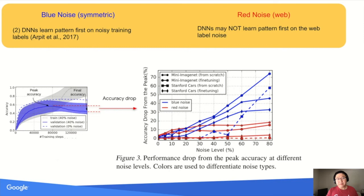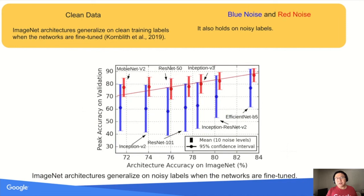Our third observation is inspired by Kornblith, who found that ImageNet architectures generalize on clean training labels when fine-tuned. We verify this finding also holds for noisy labels. We test seven different architectures from MobileNet to EfficientNet, plotting their ImageNet accuracy on the x-axis and their accuracy on the downstream noisy training task on the y-axis. There is a clear correlation between these two axes, suggesting that better architectures enjoy better generalization on noisy labels. These results show that ImageNet architectures generalize on noisy labels when the networks are fine-tuned.